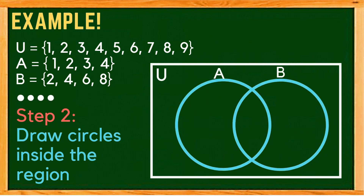Remember, the number of circles we will draw corresponds to the number of sets aside from the universal set. At this time, since we have 2 sets — namely set A and set B — we will need two circles.